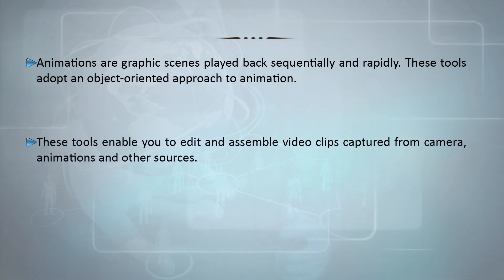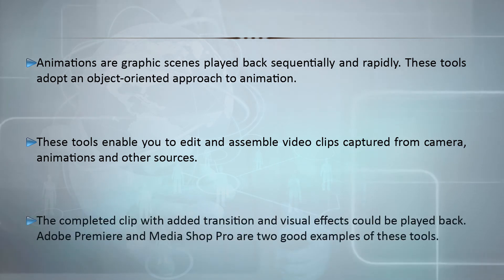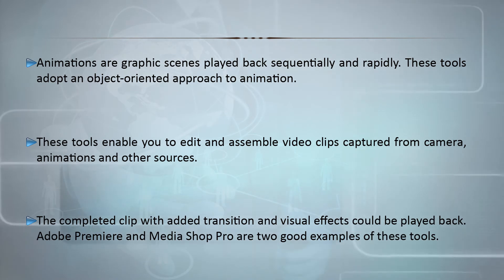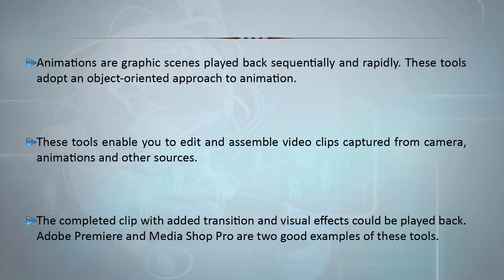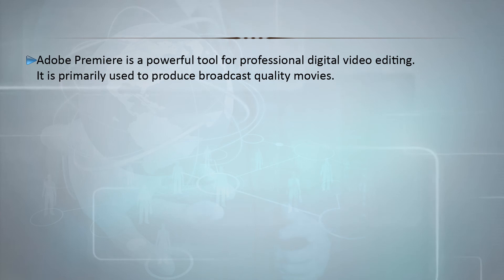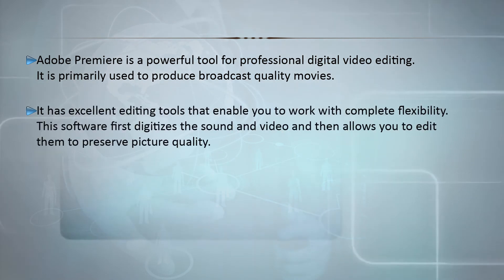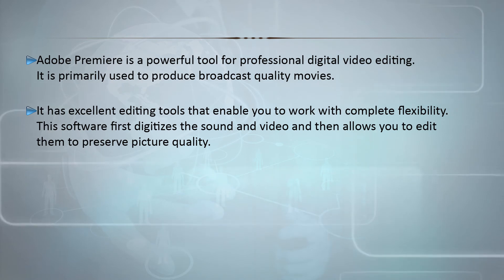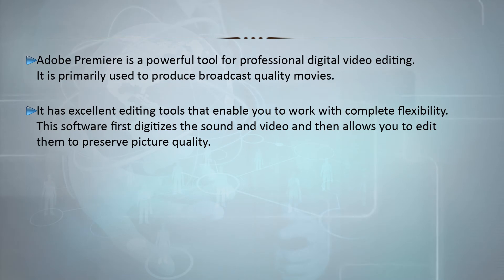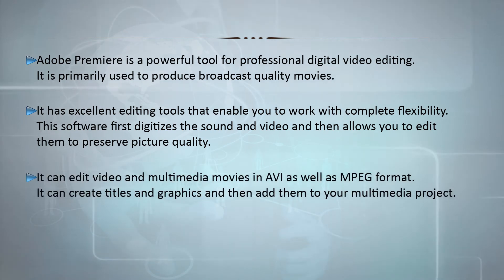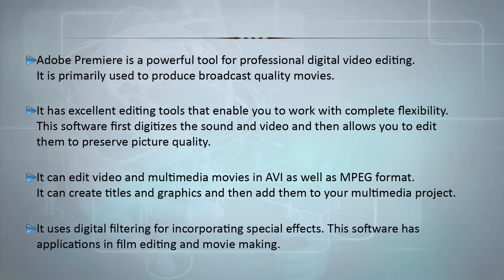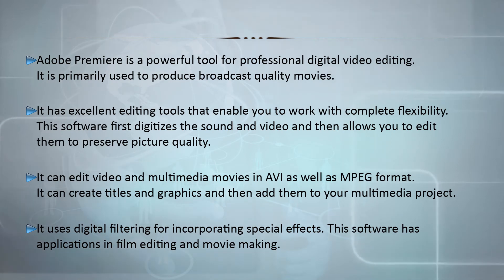Animations are graphic scenes played back sequentially and rapidly. These tools adopt an object-oriented approach to animation. They enable you to edit and assemble video clips captured from a camera, animations, and other sources. The completed clip with added transition and visual effects can be played back. Adobe Premiere and Media Studio Pro are two good examples. Adobe Premiere is a powerful tool for professional digital video editing, primarily used to produce broadcast-quality movies. It has excellent editing tools that enable you to work with complete flexibility. This software first digitizes the sound and video and then allows you to edit them to preserve picture quality. It can edit video and multimedia movies in AVI as well as MPEG format, create titles and graphics, and uses digital filtering for incorporating special effects. It has applications in film editing and movie making.